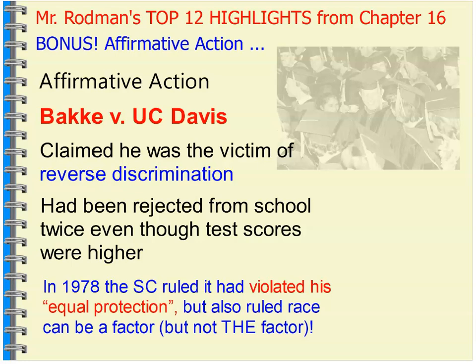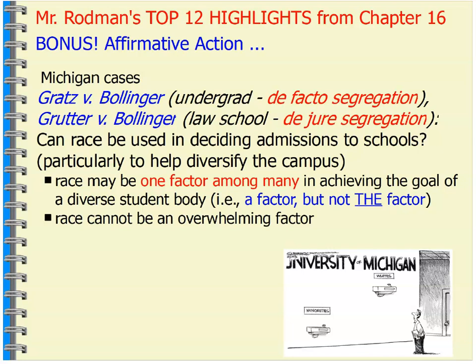Bakke v. UC Davis was a case of reverse discrimination in affirmative action. They rejected Bakke because he was white and they had quotas to meet. The Supreme Court said they did violate his equal protection rights — it was unconstitutional to reverse discriminate based on the fact that he was white and didn't fit the race factor. They said race could be a factor, but not the factor. This gave rise to two Michigan cases: Gratz v. Bollinger and Grutter. In Gratz, the undergraduate case at the University of Michigan, people were applying and the university was using race as a factor in order to meet minority quotas. The Supreme Court said no — race can be a factor, but not the factor.